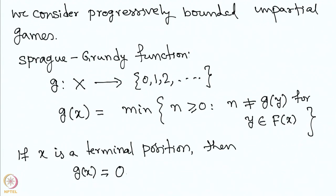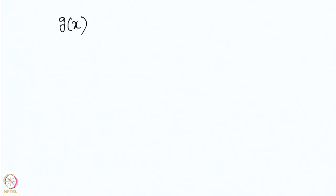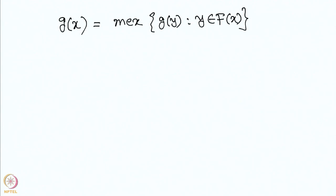How to define this? G(x) is nothing but the mex — minimum excluded value — of {G(y) : y in F(x)}. This is the mex function we introduced earlier when proving the Nim game and its strategy.